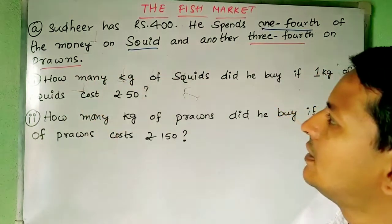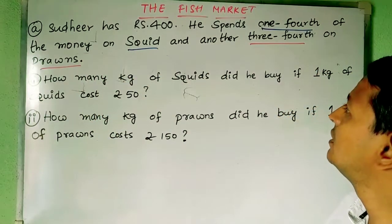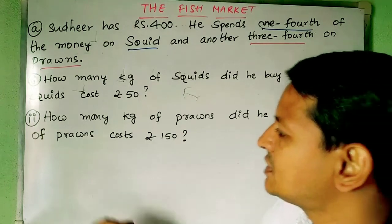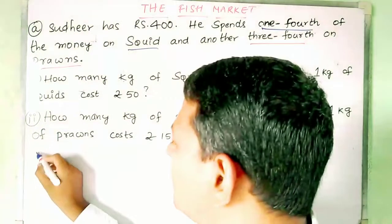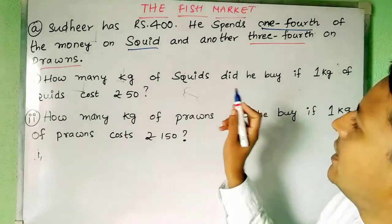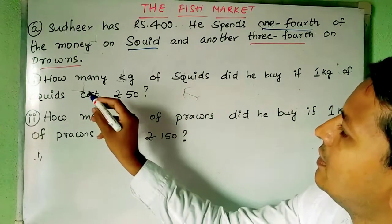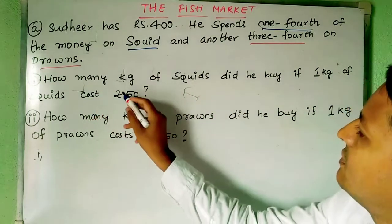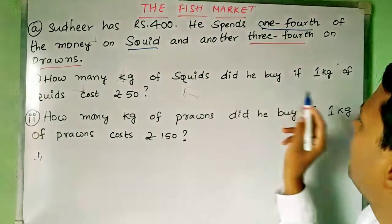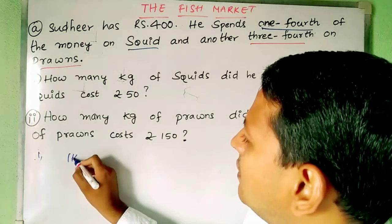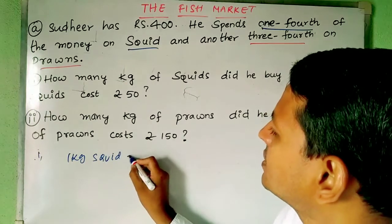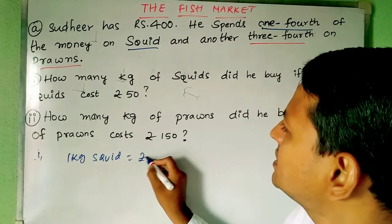First we need to understand how much is one fourth of the money he has. In part one, we need to find how much he is spending on squid and how many kg of squid he bought, given that one kg of squid costs ₹50.